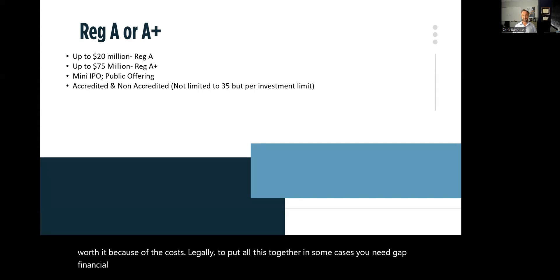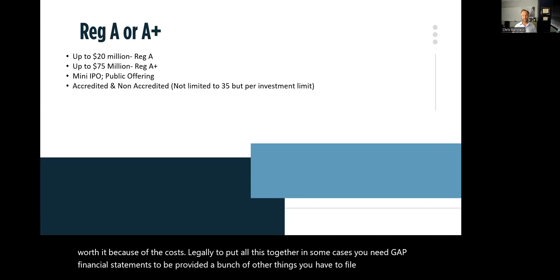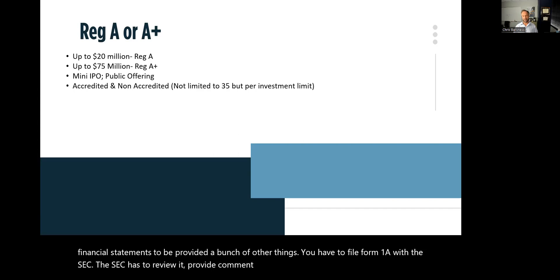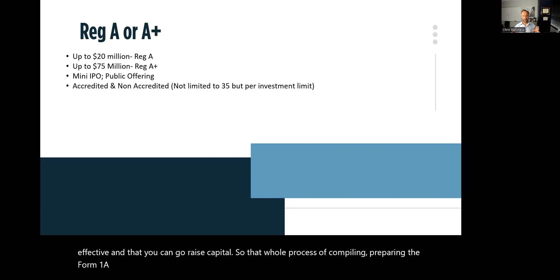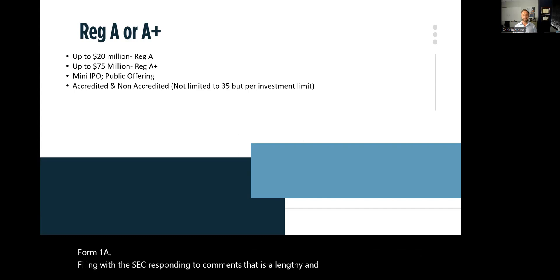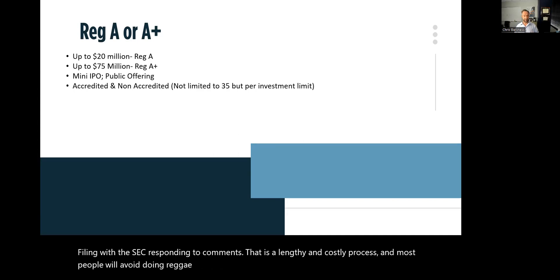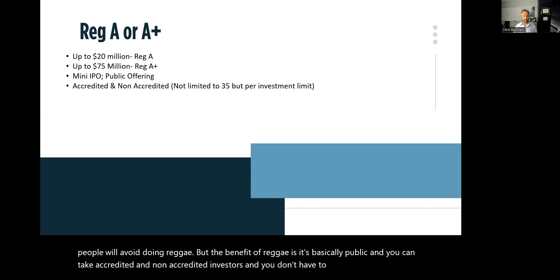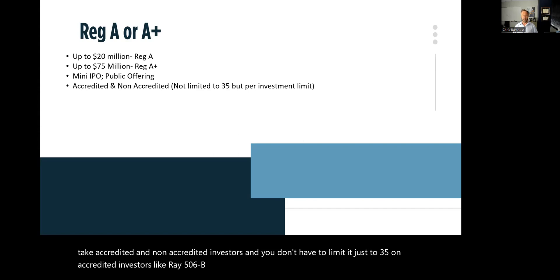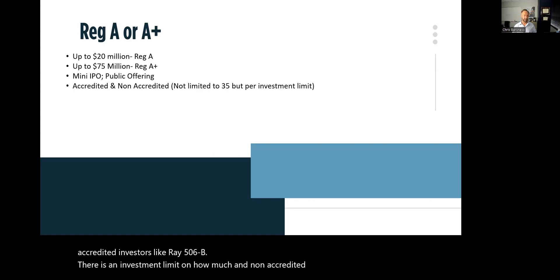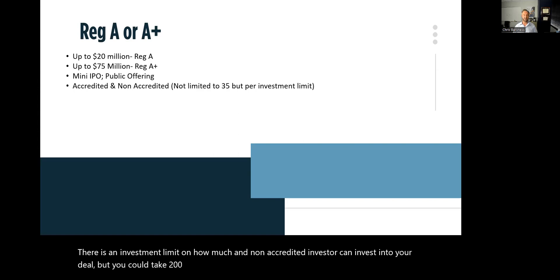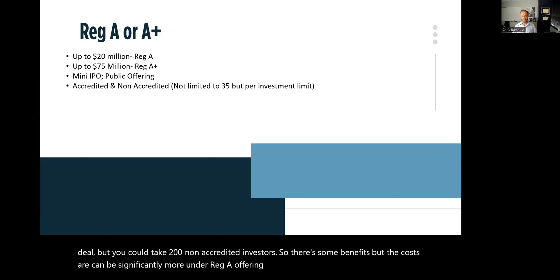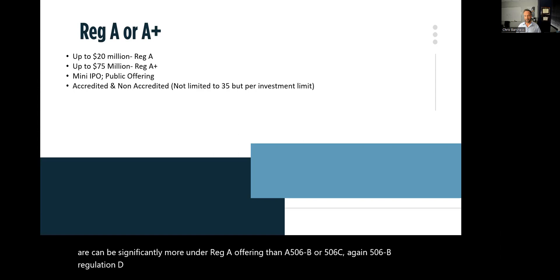Reg A requires GAAP financial statements, filing Form 1A with the SEC, SEC review and comment, and a declaration that the offering is effective before you can raise capital. The entire process of compiling and preparing the Form 1A, filing, and responding to comments is lengthy and costly. The benefit of Reg A is that it's essentially public, you can take both accredited and non-accredited investors, and unlike 506B, you're not limited to just 35 non-accredited investors — though investment limits for non-accredited investors still apply. However, costs under Reg A are significantly higher than under 506B or 506C, and 506B remains the most common way to raise capital.